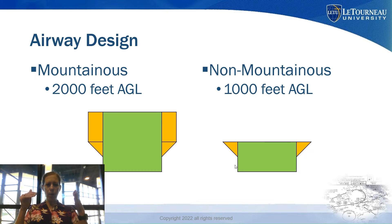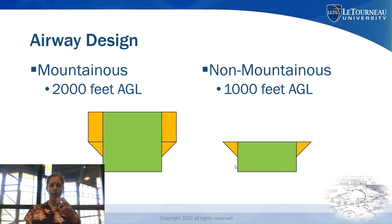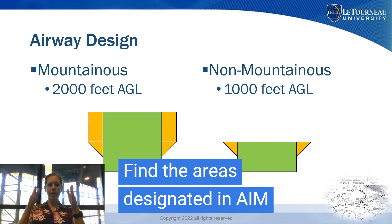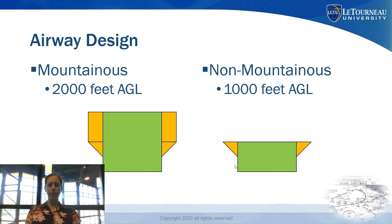Let's start with how we designate mountainous versus non-mountainous terrain. This is determined by the FAA — you can find the information in the AIM as far as what areas are mountainous or non-mountainous. In a mountainous designated area, they guarantee 2,000 feet of obstacle clearance above any obstacles. In a non-mountainous area, they guarantee 1,000 feet of obstacle clearance.